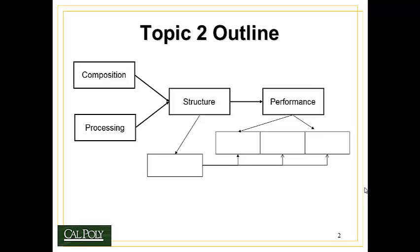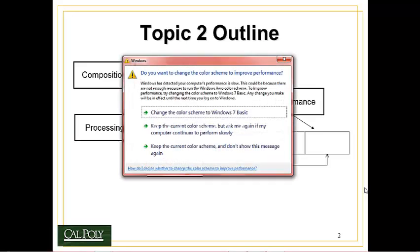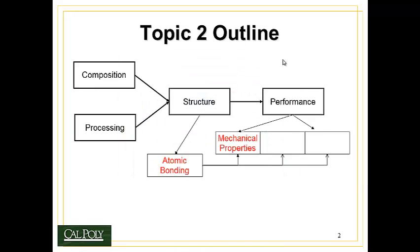Now we're going to look in Topic 2 at a few more details of this big picture. Specifically, we'll be looking at mechanical properties a lot. In particular, the elastic modulus and elastic properties of materials. And we're going to look at how atomic bonding influences these mechanical properties. We'll spend a little bit of time also looking at thermal properties and electrical properties and how they're affected by atomic bonding as well.